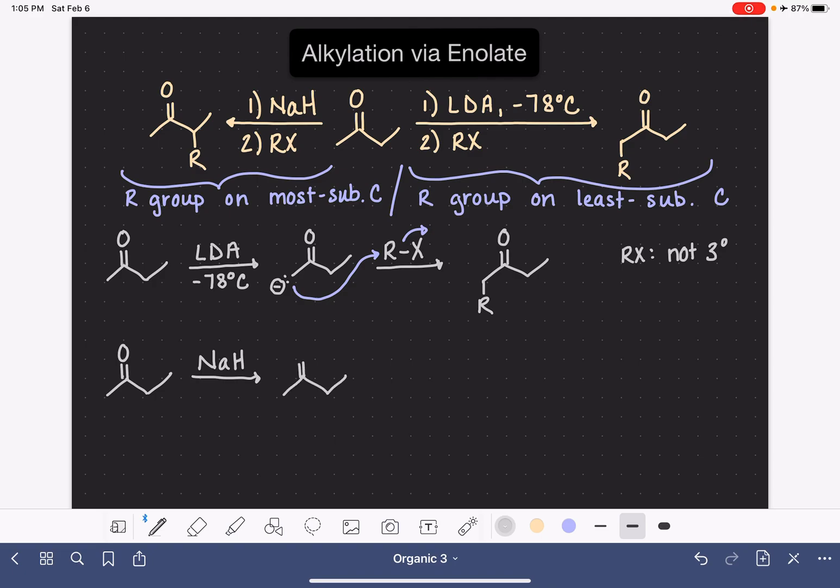Because the hydride is such a small base, it's going to form the most stable enolate, so that will be one from the most substituted carbon. And then this does the SN2 part of the reaction and puts the alkyl group on the most substituted carbon.